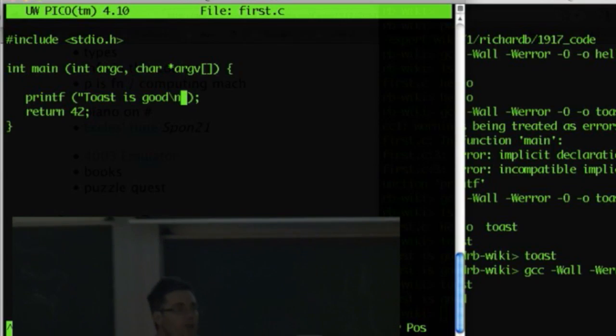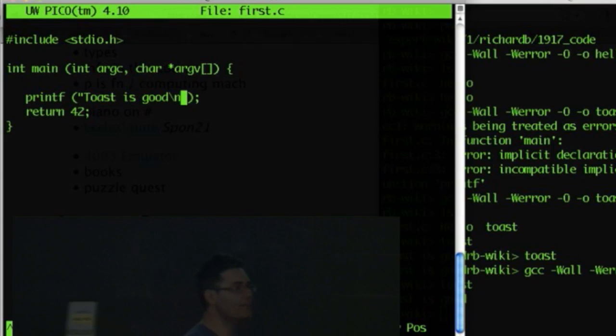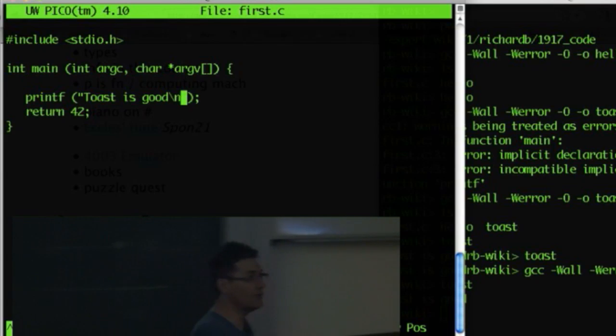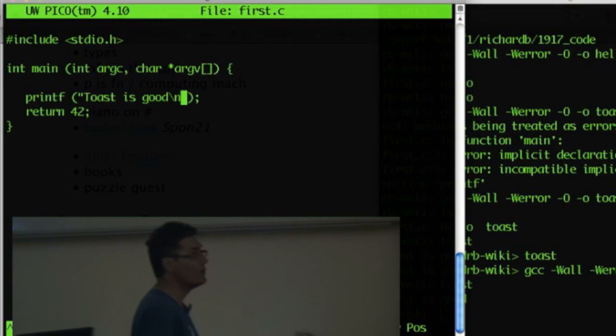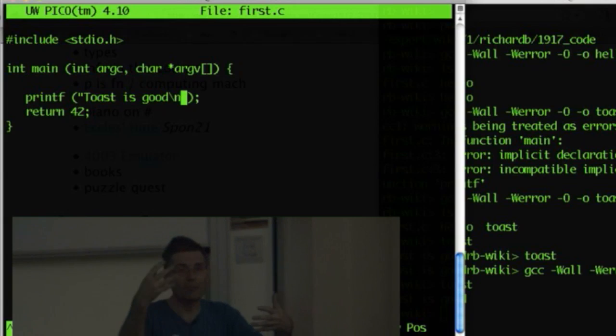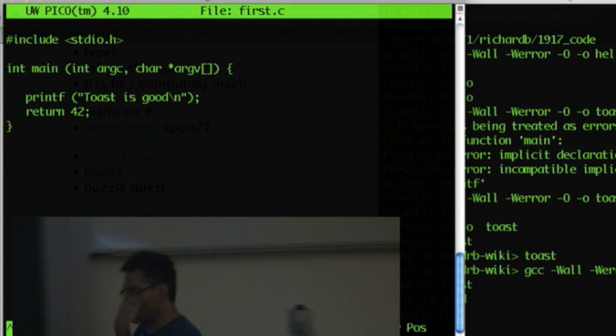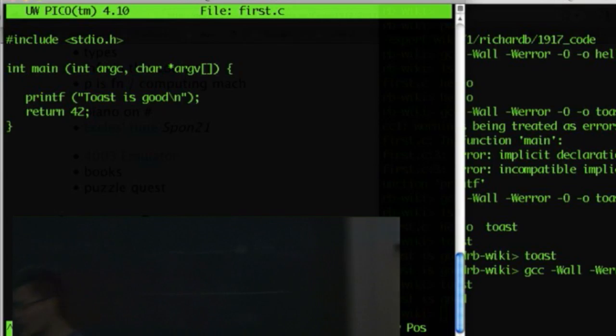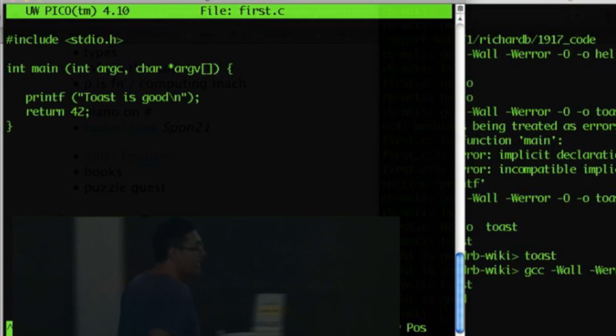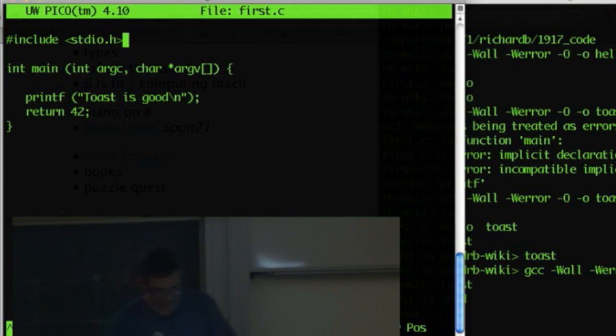If you put a comment in a program, it's something that the computer, the compiler, ignores. So why would you put something in the program that the compiler ignores? For other humans. It's not a message to the compiler, it's a message to other humans. It's also a message to you when you try and read what you've done and you can't remember what you've done.